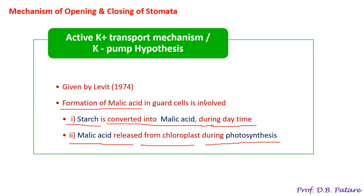There are three key points about malic acid in this hypothesis. Importantly, the active transport of potassium ions requires energy in the form of ATP.